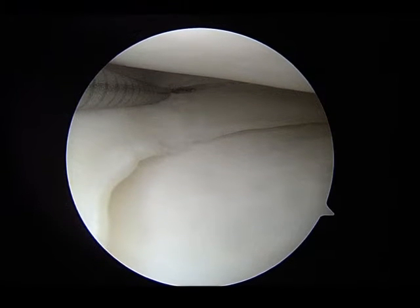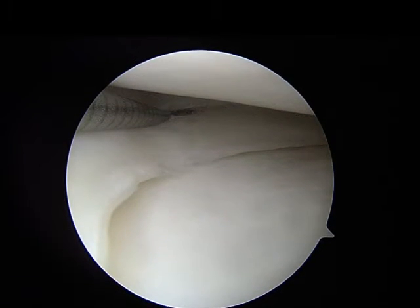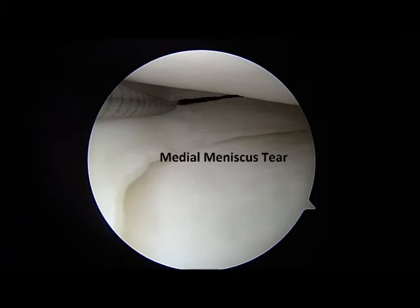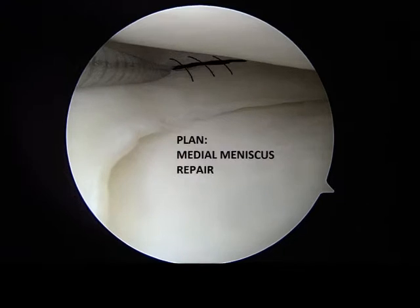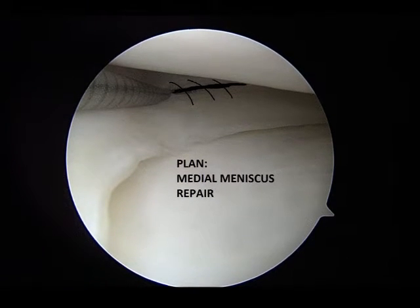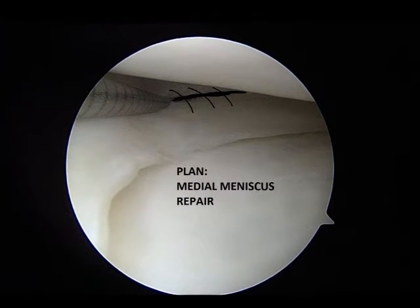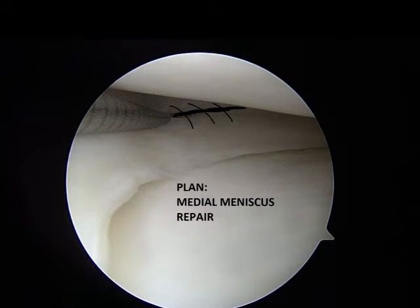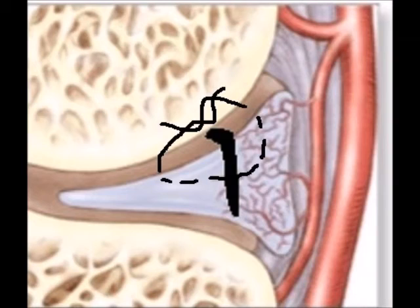As you can tell in these pictures, the tear was simple and vertical in nature, located in the right place. Plans for a suture repair were made. My plan was to place sutures across the tear gap and close it down.